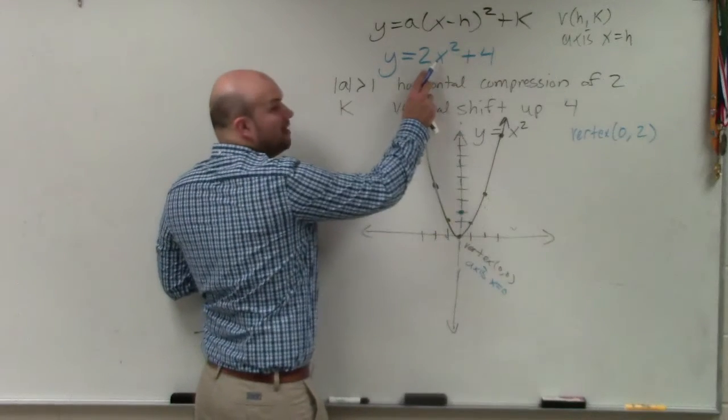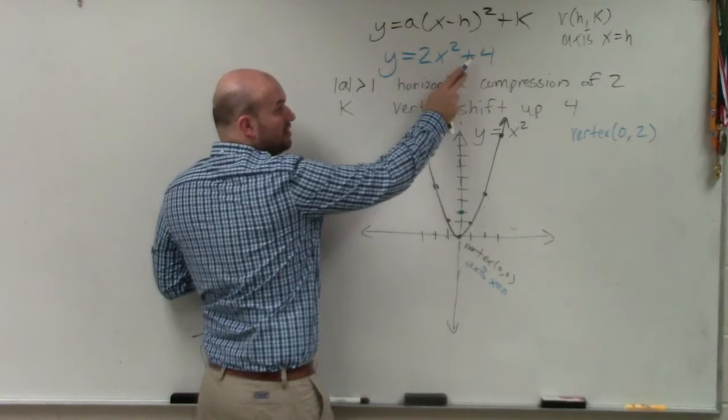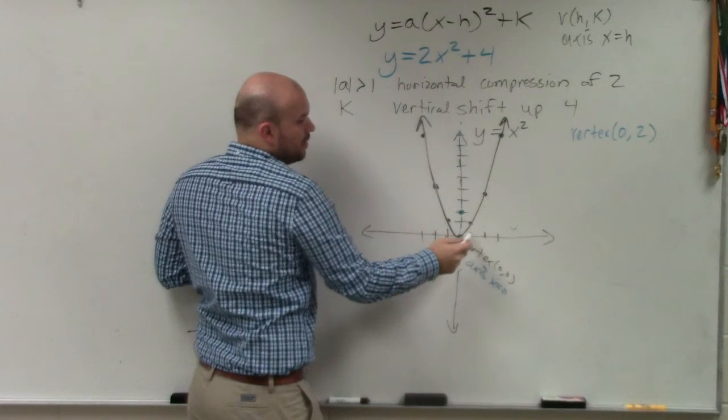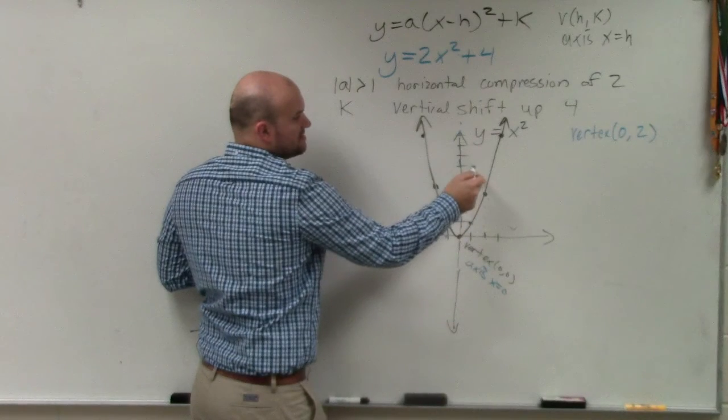Let's plug in 1. 1 squared is 1 times 2 is 2 plus 4 is 6. So when I go over 1, I'm now going up 6: 1, 2, 3, 4, 5, 6.